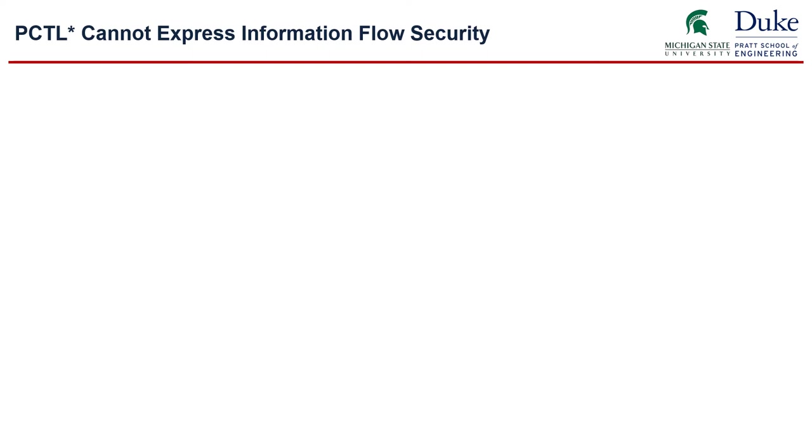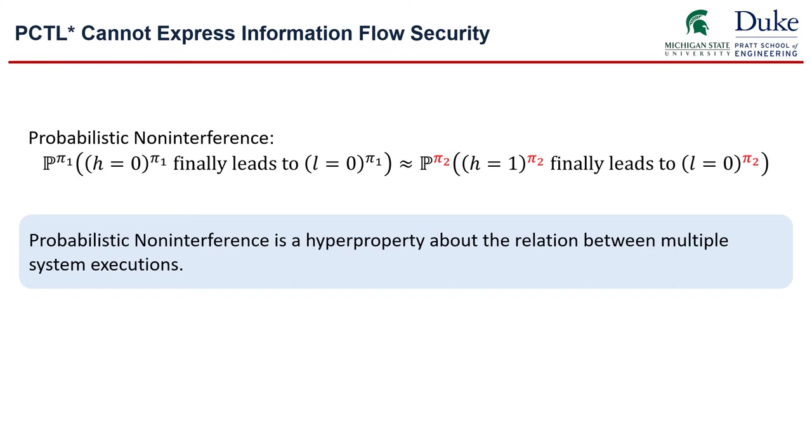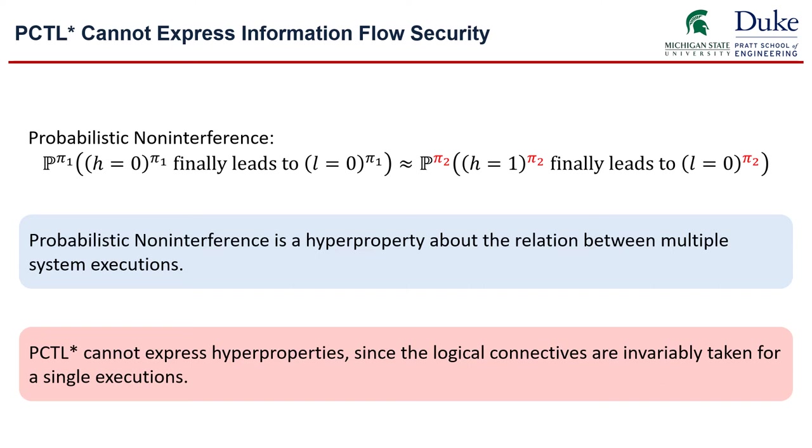However, PCTL star cannot express information flow security, even though it is very expressive. Take the probabilistic non-interference example that we just discussed as an example. There, we are comparing the probability related to two system executions. Such a property like probabilistic non-interference is called a hyper property because it involves the relationship between multiple system executions. And obviously, the PCTL star logic cannot express those hyper properties because the logic connectives and or next and until are all invariably associated for a single system execution.